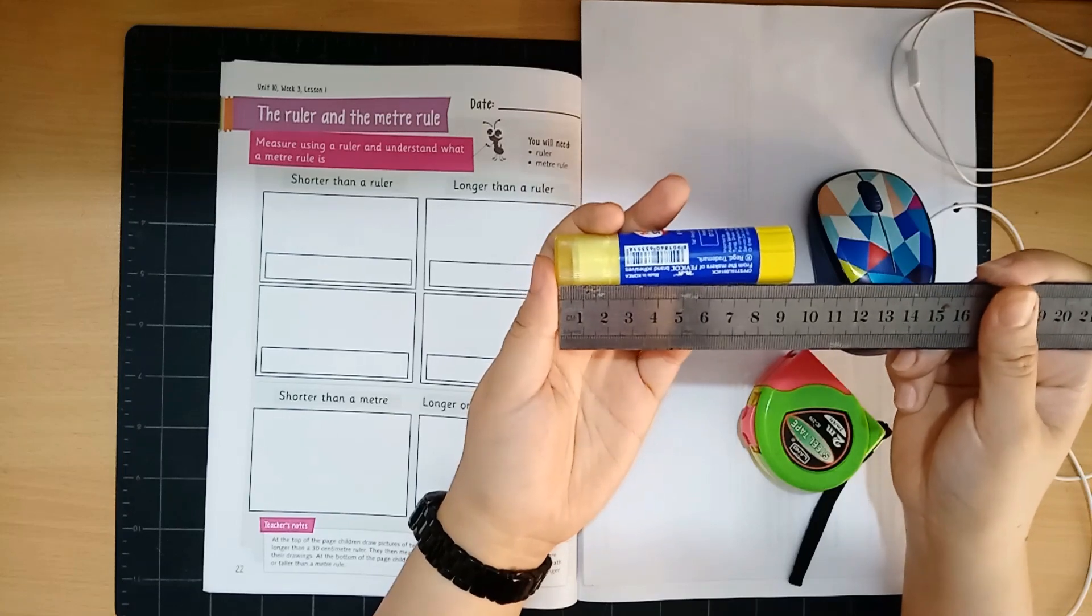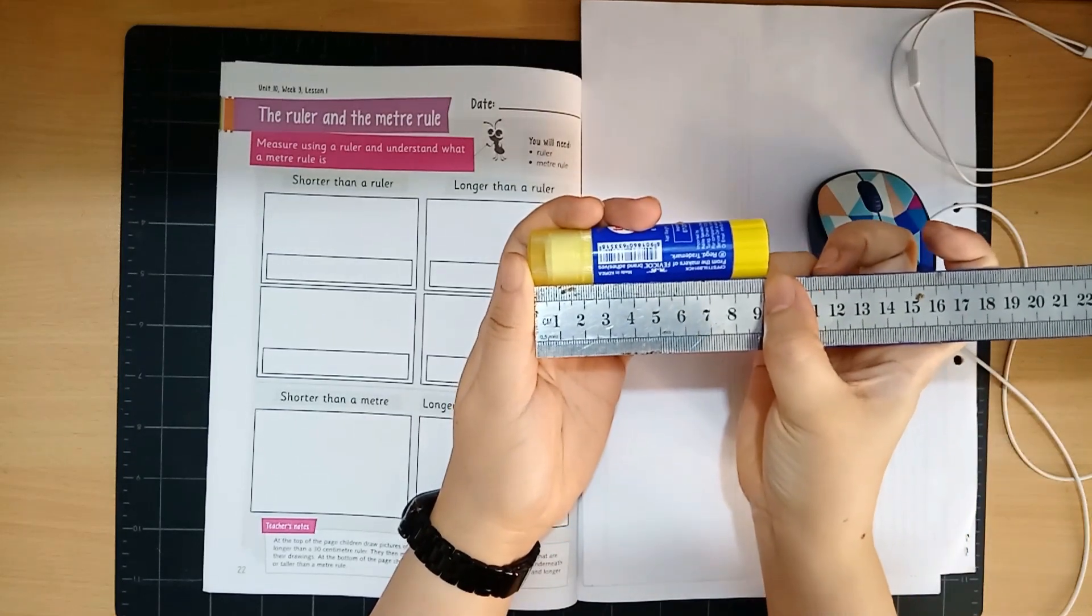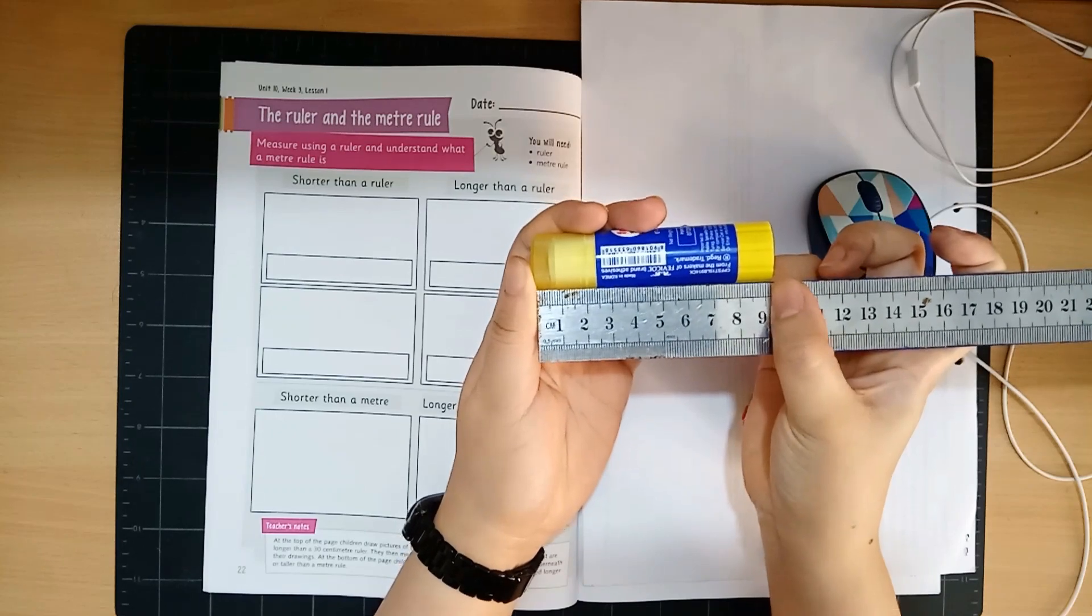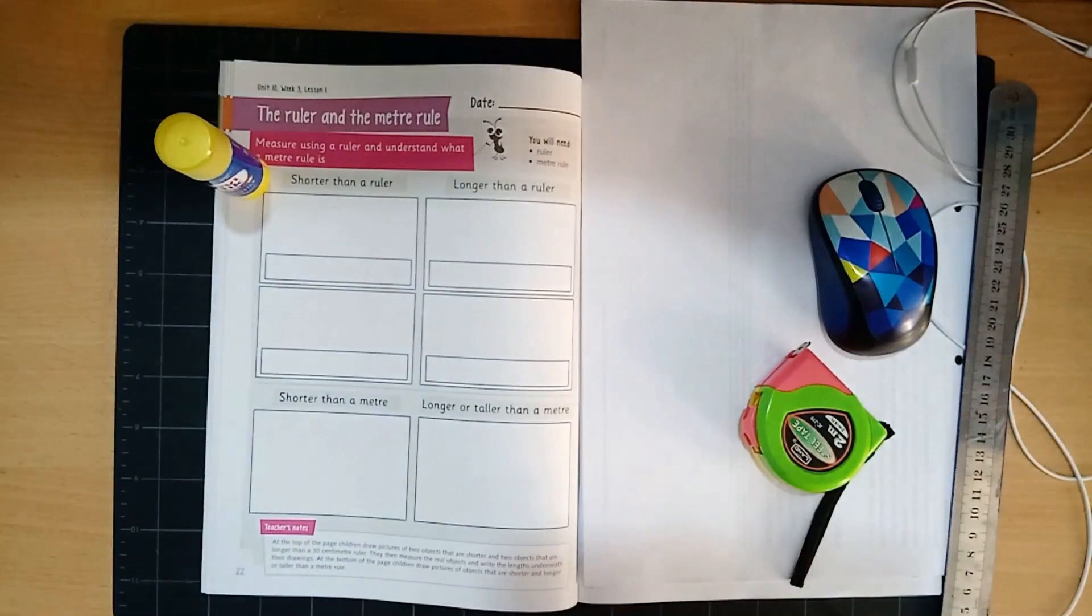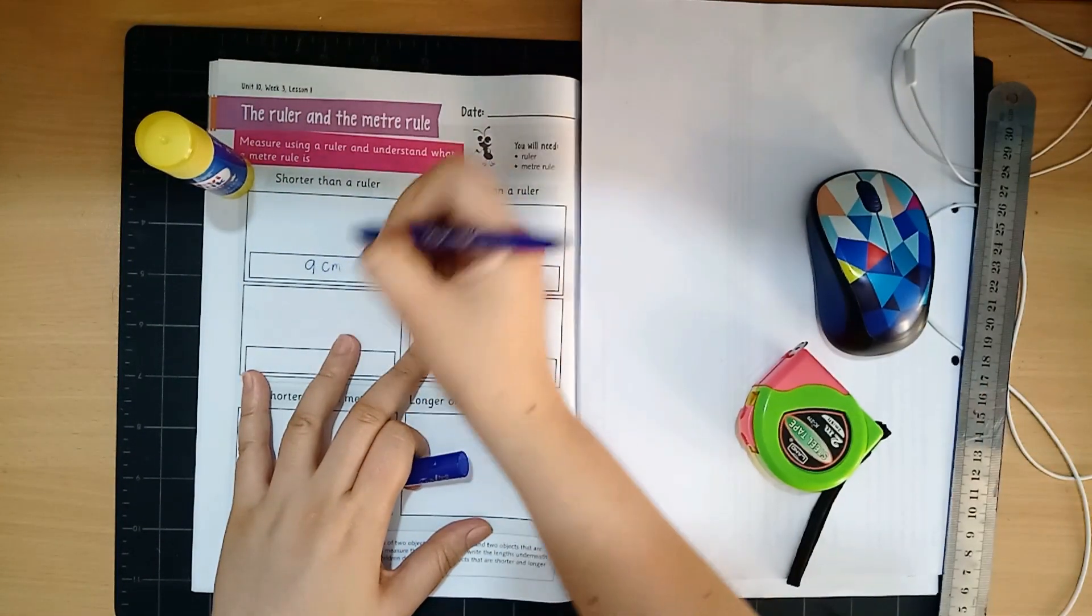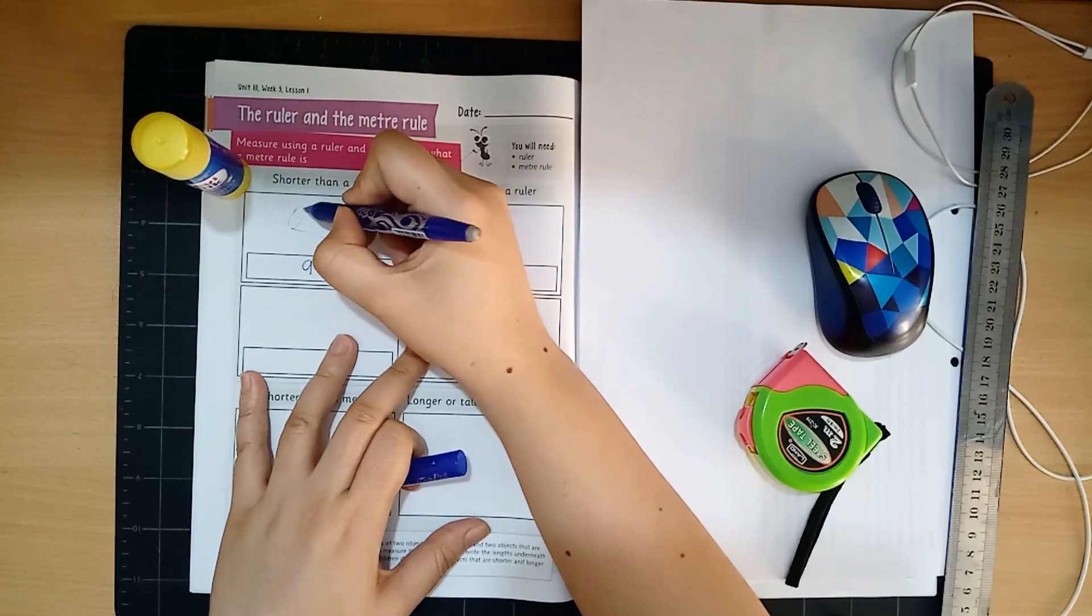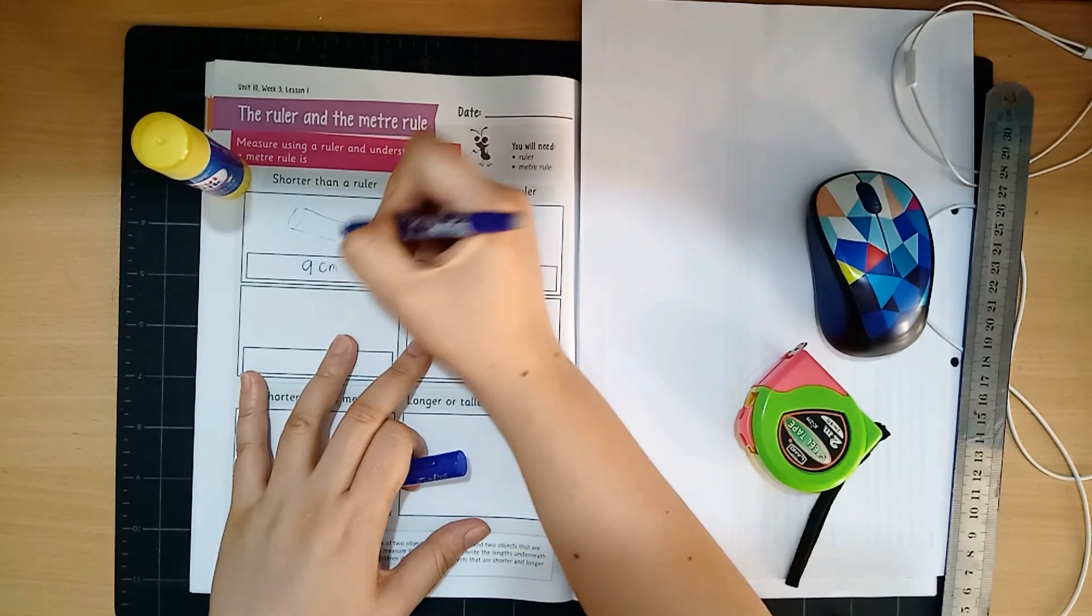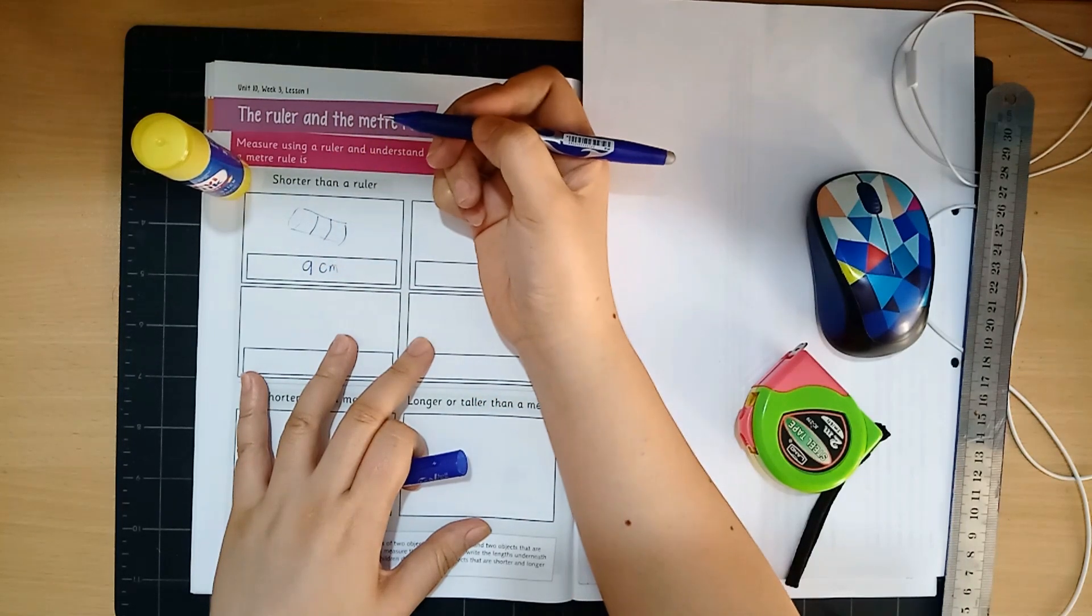So from zero and in here it shows nine. So this is nine centimeters. I can write nine centimeters over here. Nine centimeters and I will draw my glue stick. Okay the glue stick looks like that and I'm going to color it later.